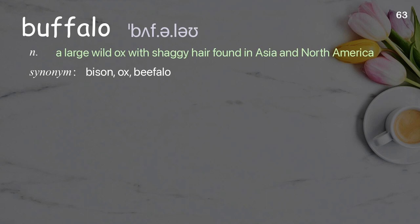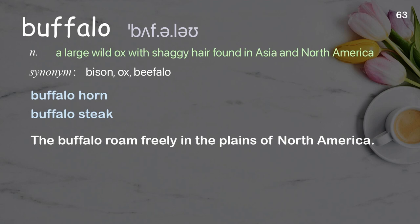Buffalo: a large wild ox with shaggy hair found in Asia and North America. Examples: buffalo horn; buffalo steak. The buffalo roamed freely in the plains of North America.